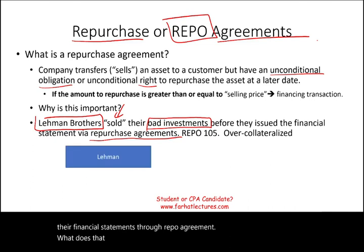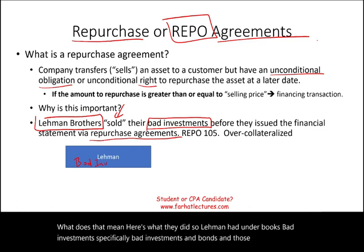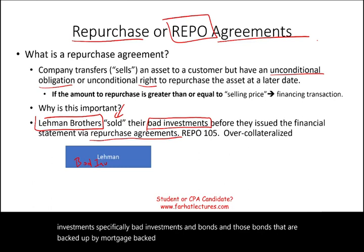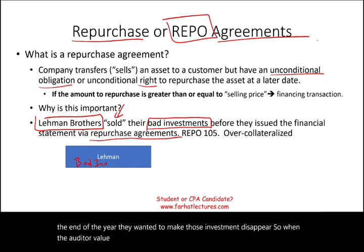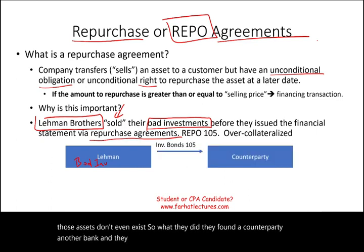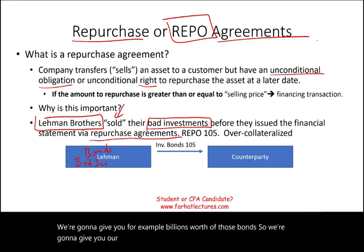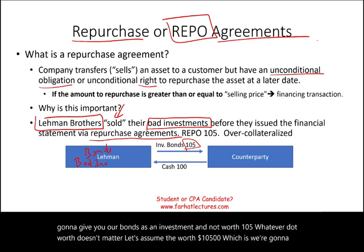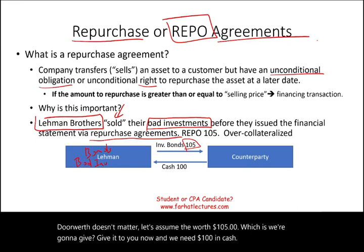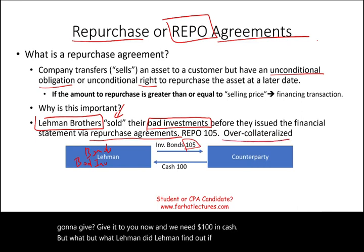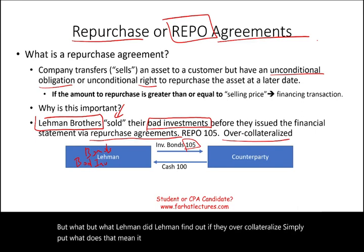Here's what they did. Lehman had on their books bad investments — specifically bonds backed by mortgage-backed securities. Right before the end of the year, they wanted to make those investments disappear, so when the auditor looked at their financial assets, those assets wouldn't exist. They found a counterparty bank and said: we're going to give you billions worth of those bonds — let's assume worth $105 — and we need $100 in cash. Lehman found that if they over-collateralize, meaning they give 5% extra for the $100, it looks like a sale, because a repo agreement requires being within 2%.